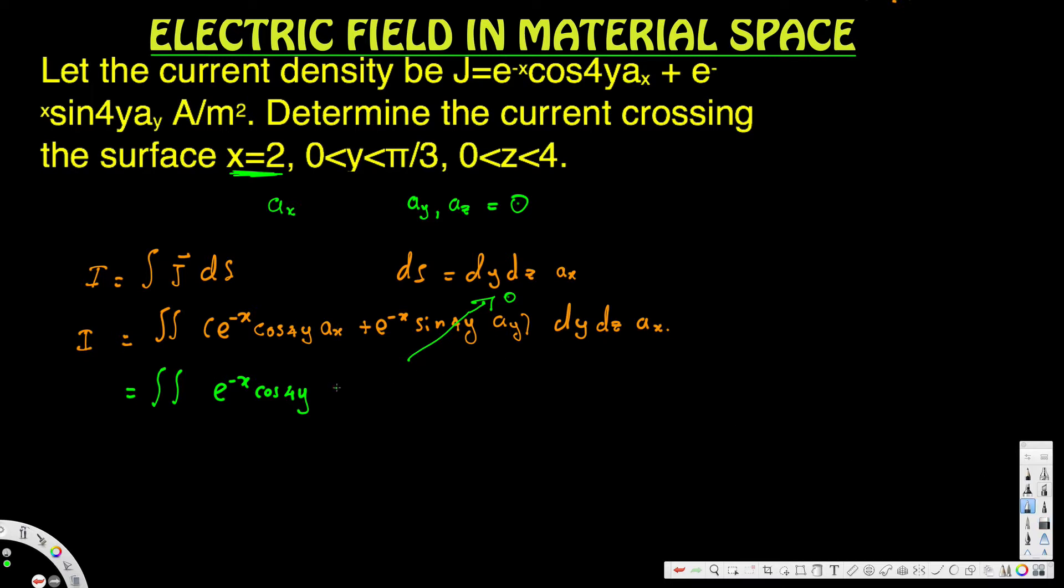First we're integrating with respect to y. Y is going from 0 to 5π/3, so the limits of integration are 0 to 5π/3. Then z is going from 0 to 4, so this is going from 0 to 4.